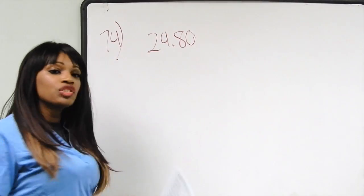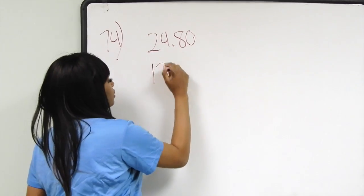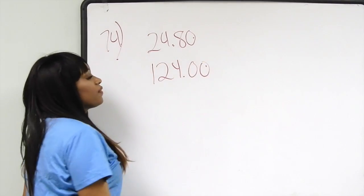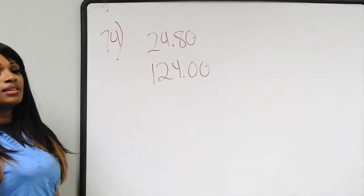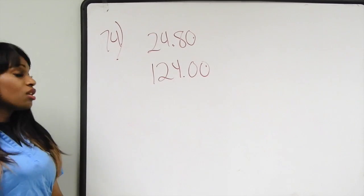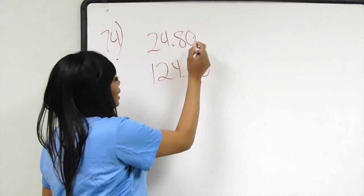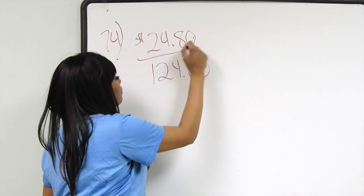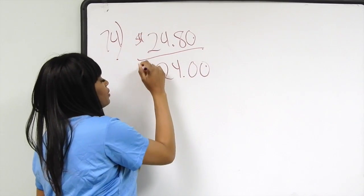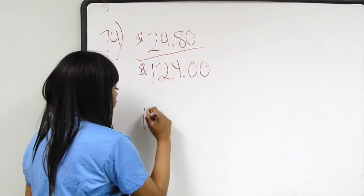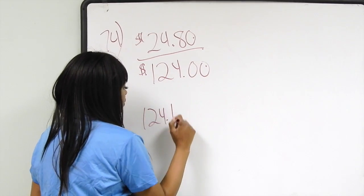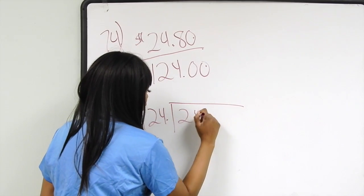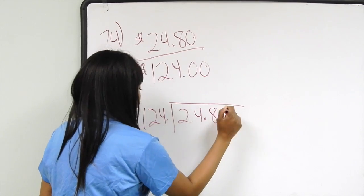The original price was $124. In order to find the discount rate, we have to take $24.80 and divide it by $124.